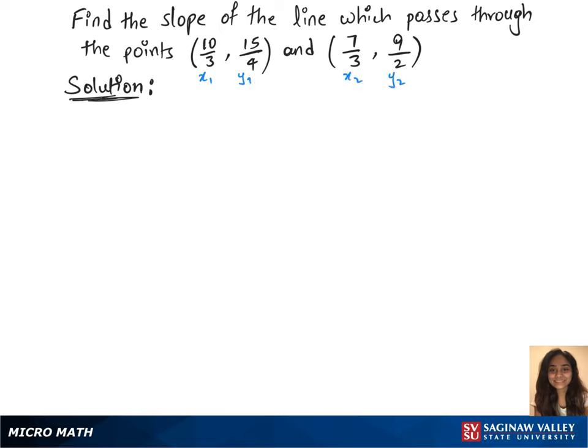Let's now use the slope formula, which is m equals y2 minus y1 over x2 minus x1.